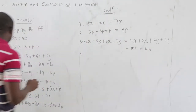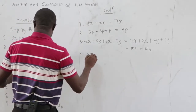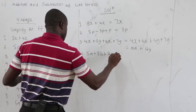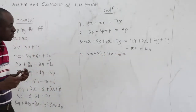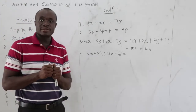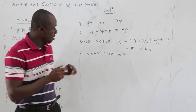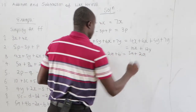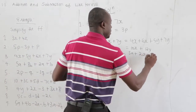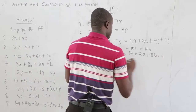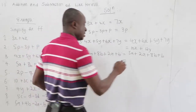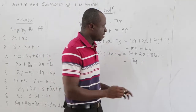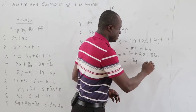The fourth question: 5a plus 8b plus 2a plus b. We have two different variables, so we group like terms: 5a plus 2a equals 7a, and 8b plus b equals 9b.